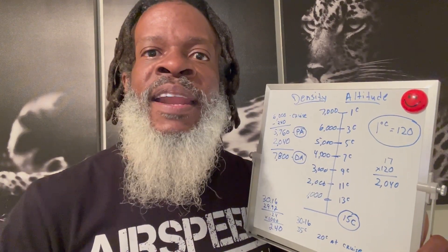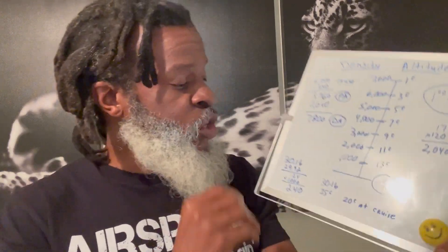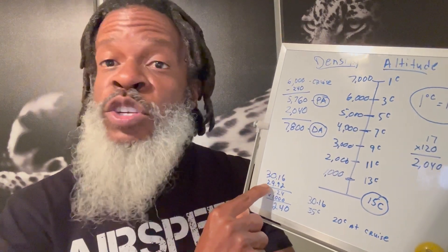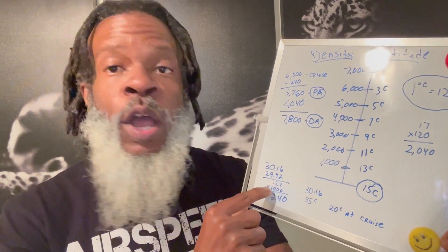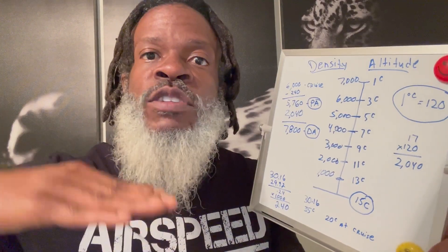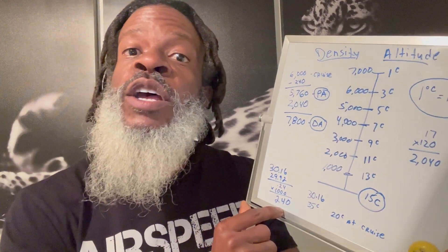Let's run some numbers. If we get an altimeter setting of 30.16, we know we've got to calculate our pressure altitude. Standard pressure is 29.92, so we take 30.16 and subtract 29.92 to get 0.24. It's always on a 1,000-foot scale — for every 1,000 feet we go up, we lose an inch of mercury — so we multiply 0.24 times 1,000 and get 240.